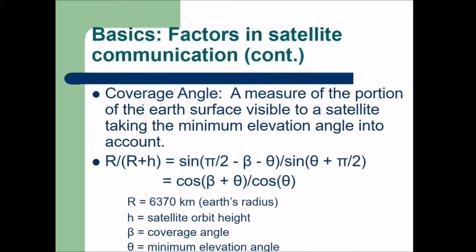Continuing the factors in satellite communication — there is coverage area, which is the measure of the portion of the earth's surface visible to a satellite, taking the minimum elevation angle into account. This is expressed as a relationship of R divided by R plus H, where R is the earth's radius, H is the satellite orbit height, beta is the coverage angle, and theta is the minimum elevation angle.